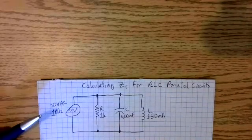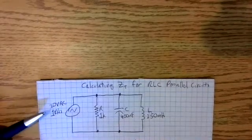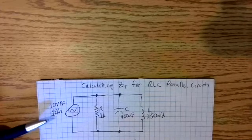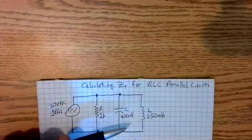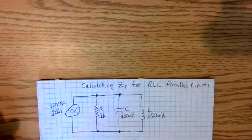So for our example circuit, my source is 20 volt AC at one kilohertz. My resistor is 1k, my capacitor is 400 nanofarads, and my inductor is 150 millihenries.